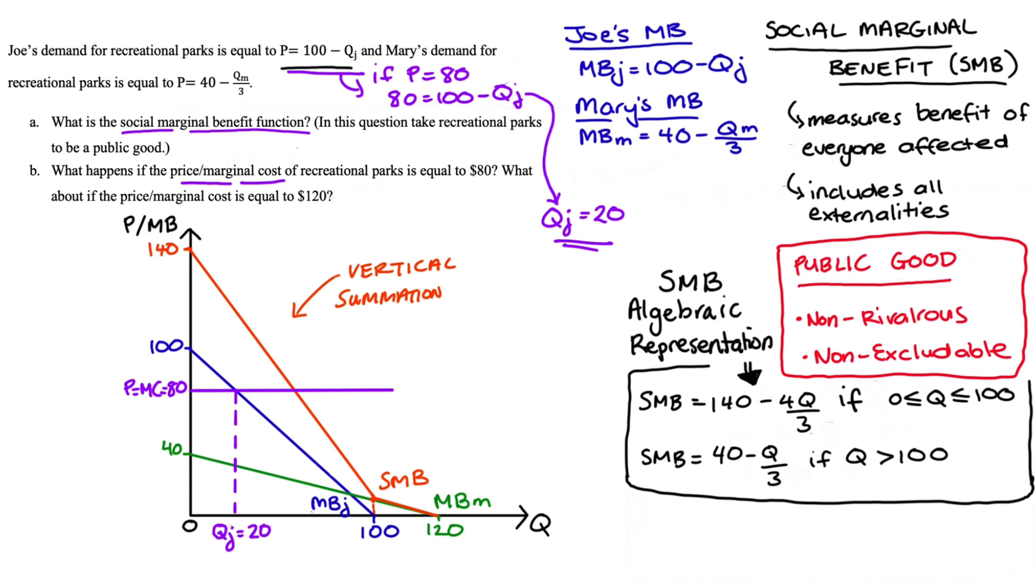But as we discussed in part A however, our recreational parks is a public good. It's both non-rivalrous and non-excludable. So if the price was $80 Joe would buy 20 recreational parks but Mary could use and get marginal benefit from those quantities, those parks that Joe buys.